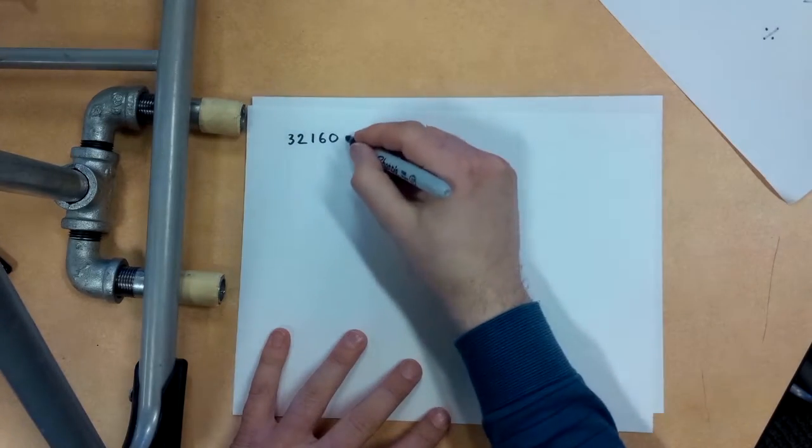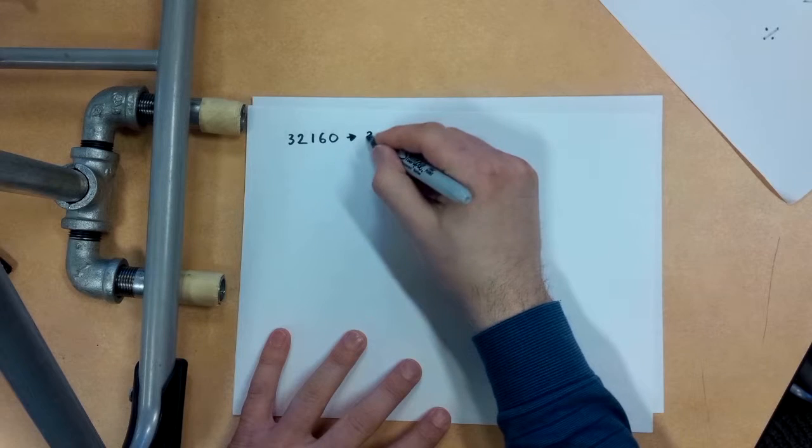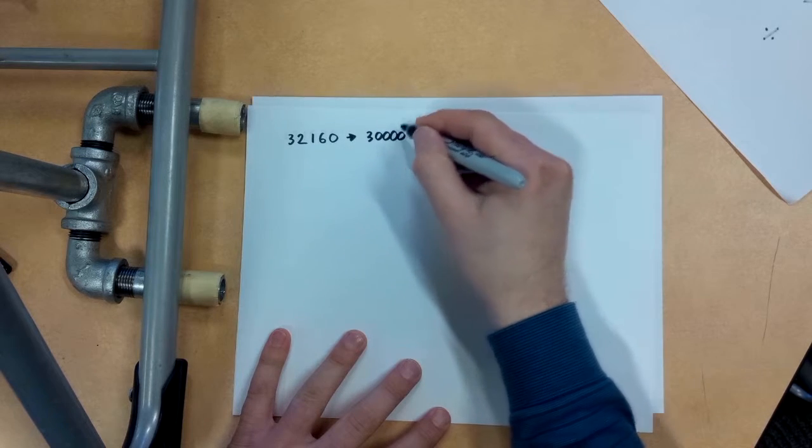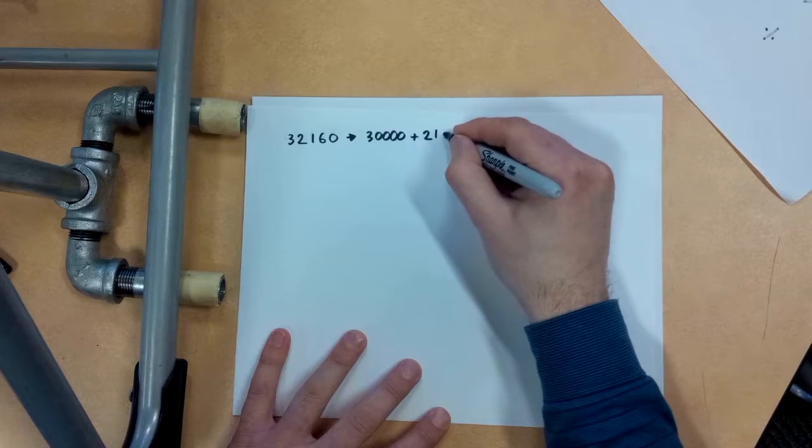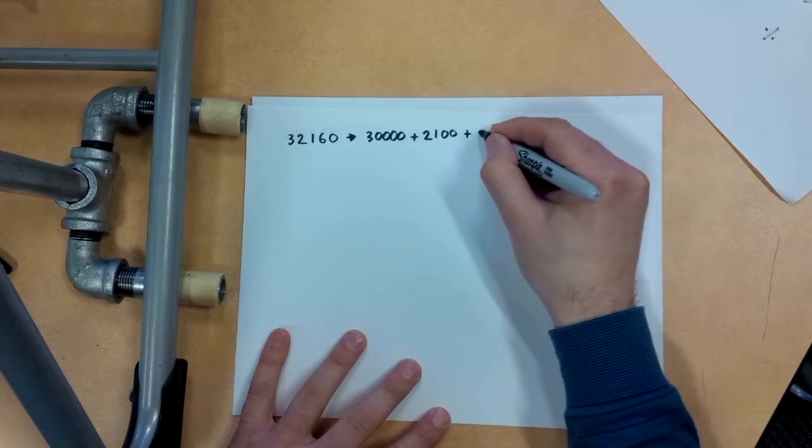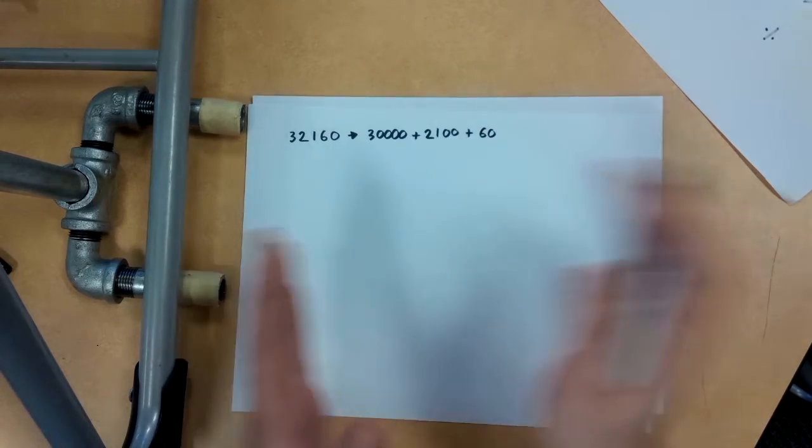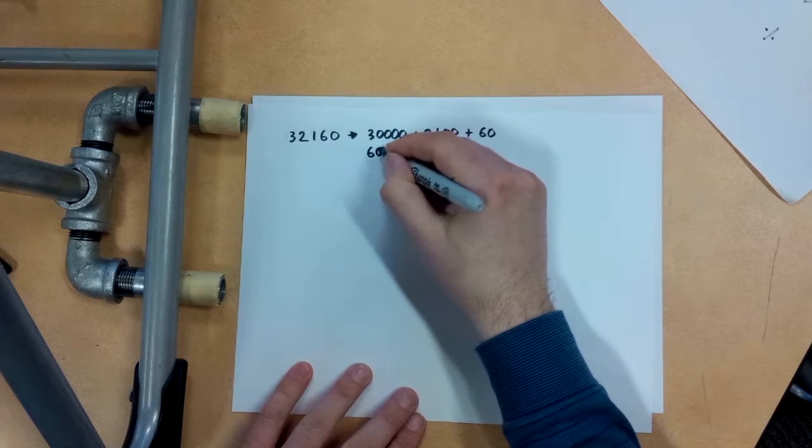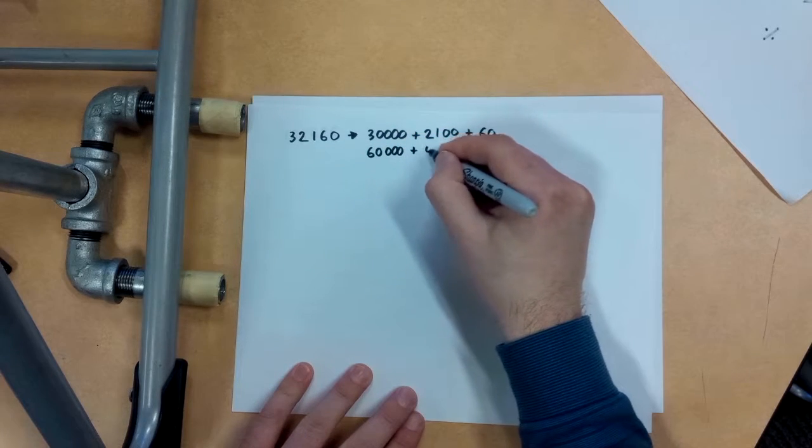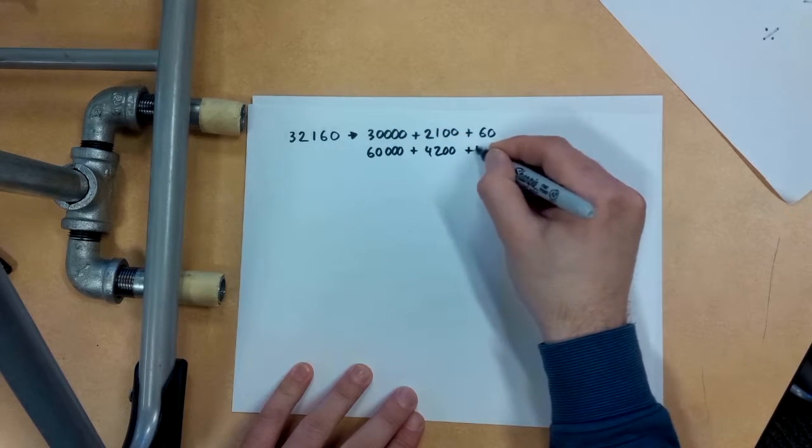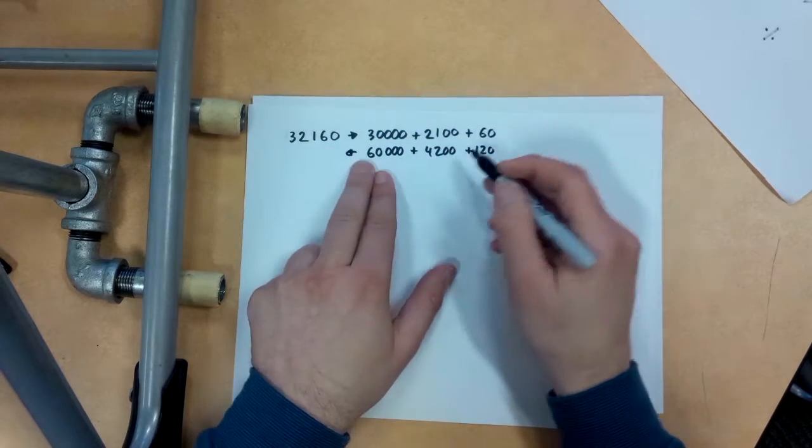32,160. So 30,000 plus, you know, I'll do it in chunks here. How about 2,100 plus 60? So I broke it into fewer chunks. If I double that, I'm going to get 60,000 plus 4,200 plus 120.